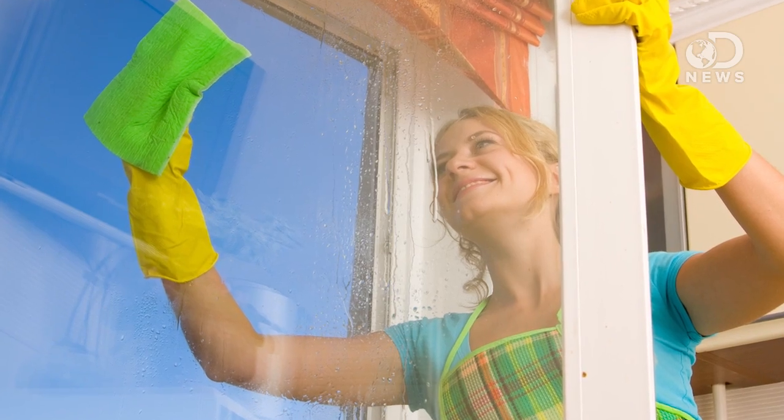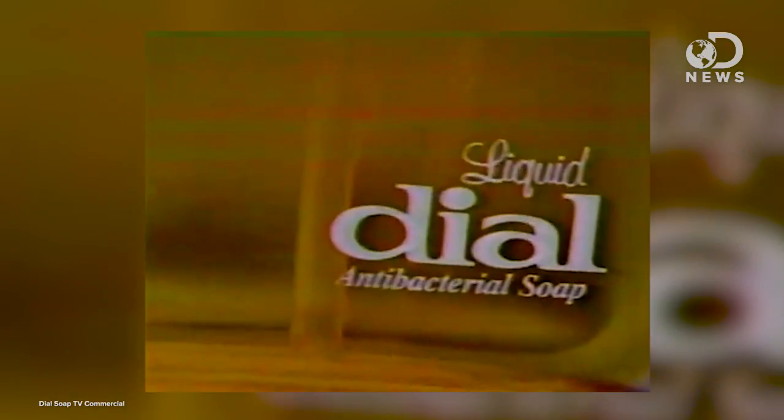Triclosan has been around since the 1960s, and was originally used in hospitals to stem bacterial growth before surgery. In the 90s, fueled by an anti-germ fear, it began to show up in soaps and other household items. Heck, you can even find it in clothing and furniture.